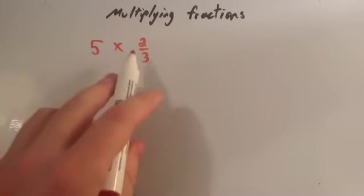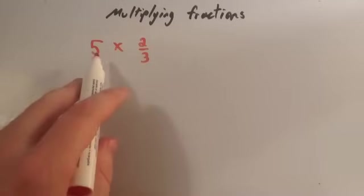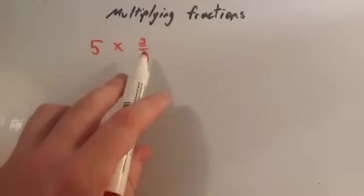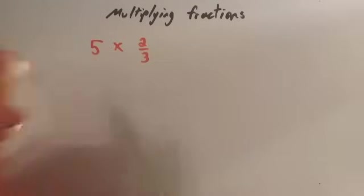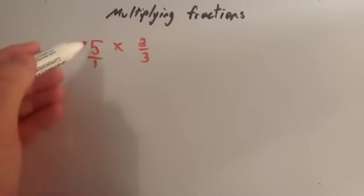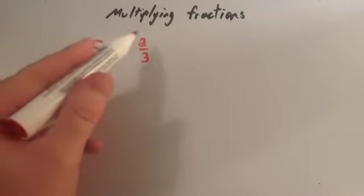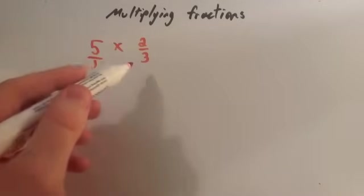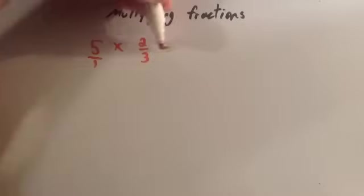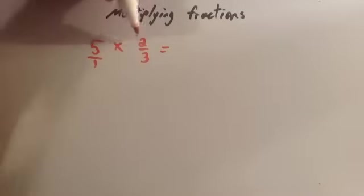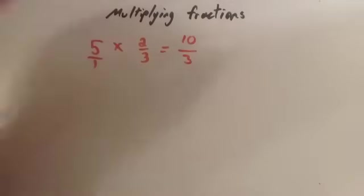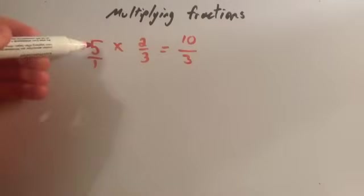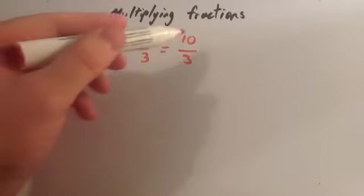We're now going to do five multiplied by two-thirds. So to do a whole number — an integer — multiplied by a fraction, I always put the whole number over one, because five is the same as five wholes. So five over one multiplied by two over three — we just use the same method as before. We multiply the top numbers together: five times two is ten, and one times three is three. So five multiplied by two-thirds is ten-thirds.